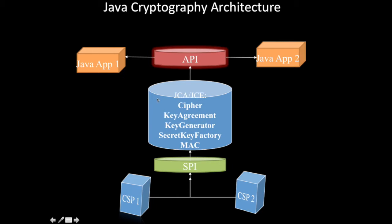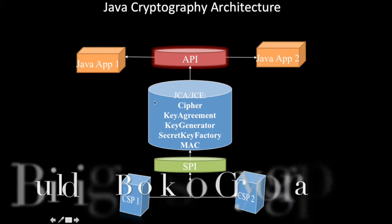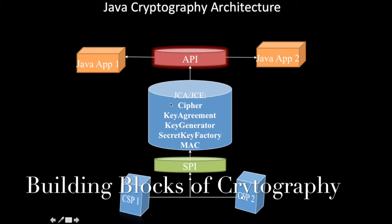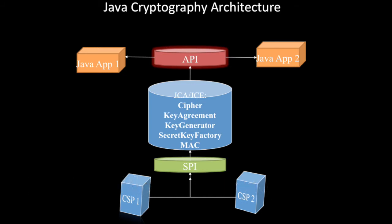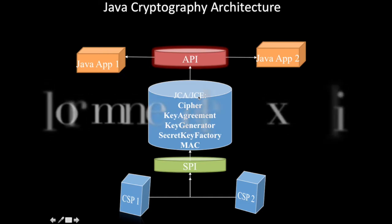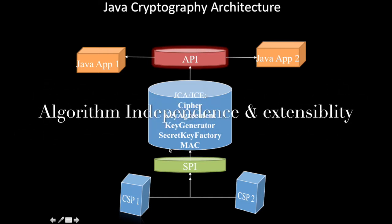Using these two concepts, there are building blocks like keys, certificates, keystores, message digests, digital signatures, secure random, ciphers, and MACs. Using the API, you invoke one of the factory methods, and the task of the provider's SPI is to pick up the implementation class and give the instance back to the API.